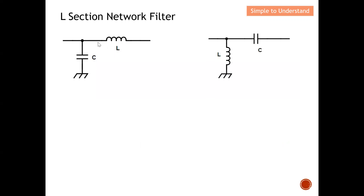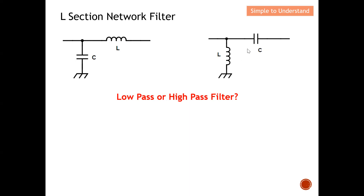These two diagrams show the LC network, which can be either a low pass or a high pass filter. The objective of this video is to distinguish between the two by understanding the key concept. In this first configuration, the series element is an inductor L and the shunt element is a capacitor C. In the second configuration, the series element is a capacitor C and the shunt element is an inductor L.